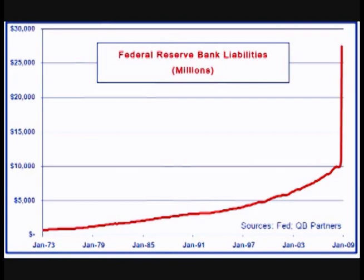If the country was in a recession, the Fed may want to lower reserves, which will increase the money supply to try to increase spending and reduce unemployment. If the economy was booming and inflation was a concern, the Fed may want to increase reserves, which will lower the money supply to try to reduce spending.